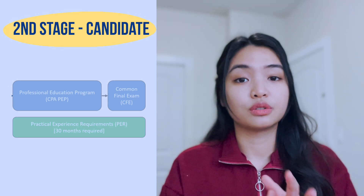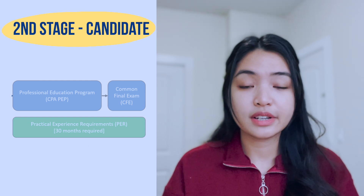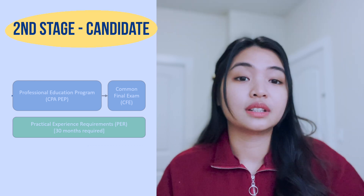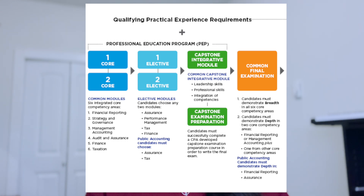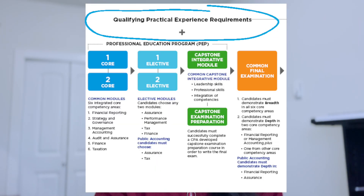Now let's talk about the second stage. A candidate is anyone enrolled in the CPA PEP program, which is a two-year graduate-level program for those studying for a CPA designation. After completing all 14 prerequisite courses, you can enter the CPA PEP program. It consists of six modules: Core 1 and Core 2, followed by two electives, and two capstones that lead to the Common Final Examination, or CFE, which you must pass. The program takes at least two years on a part-time basis, and they also require a 30-month practical experience requirement, which you can complete either during or after your CPA program.